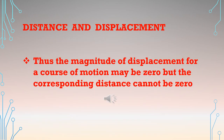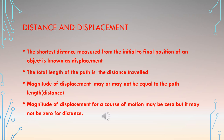Remember: the magnitude of displacement for a course of motion may be 0, but the corresponding distance cannot be 0. The shortest distance from the initial to the final position is displacement; the total length of the path is distance. The magnitude of displacement may or may not equal the path length, and displacement can be 0 while distance cannot.